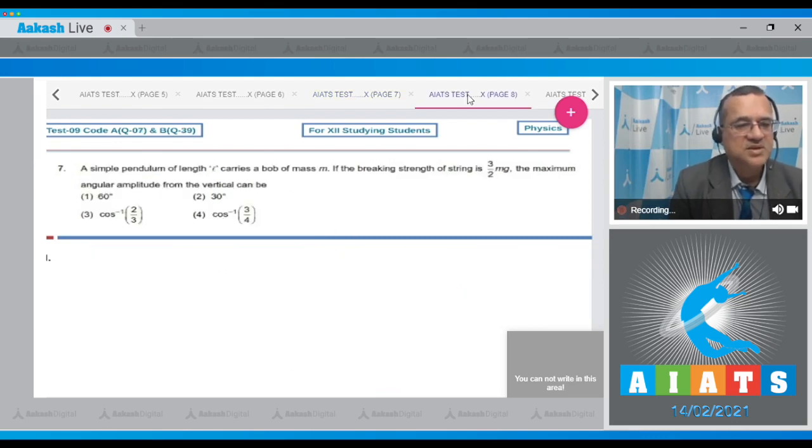Question number 7 is a simple pendulum of length L carries a bob of mass M. If the breaking strength of the string is 3/2 mg, the maximum angular amplitude from the vertical can be, these are 4 options. Now see the diagram.